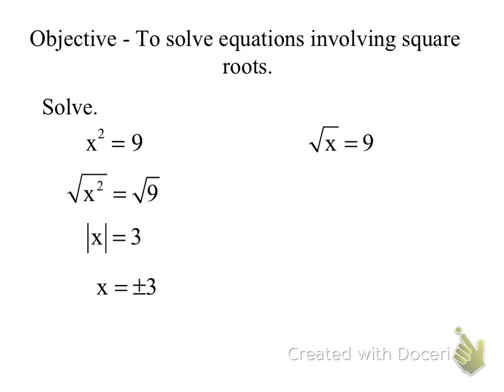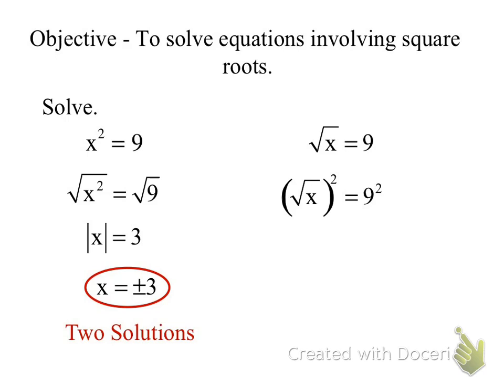This time I have the square root. What's the inverse operation of a square root? Finding the square — I'm going to square it. Whenever I take the square of a root, the square and root cancel each other out, and I'm left with x. When I square 9, I get 81. That's the answer.